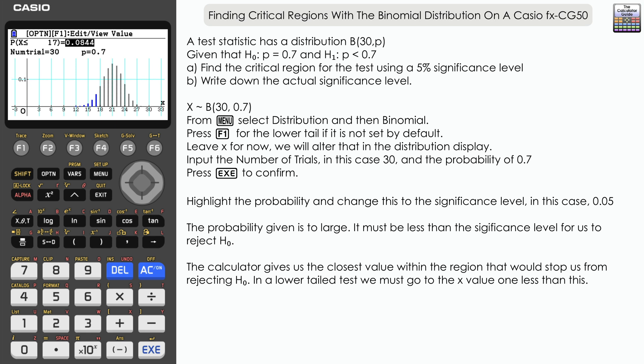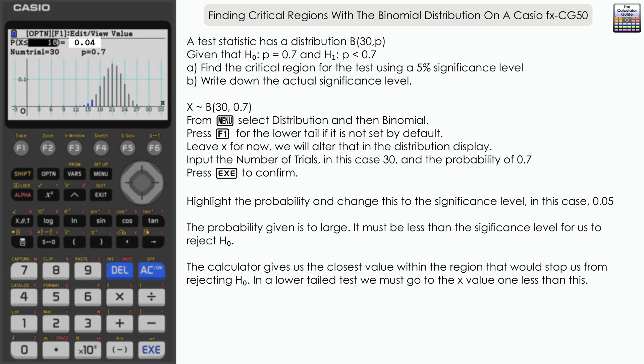What we want to do is find out what value would cause us to reject the null hypothesis, and for that, as we've got a lower tail test, we're going to input 1 less than 17. So 16, and enter, and you can see here that has altered the probability to 0.04.